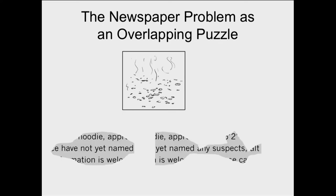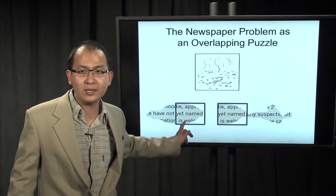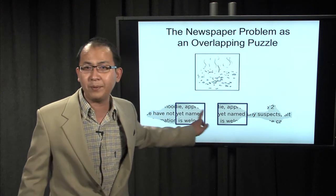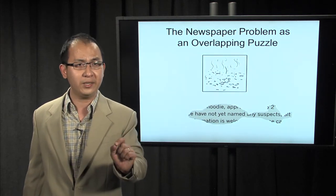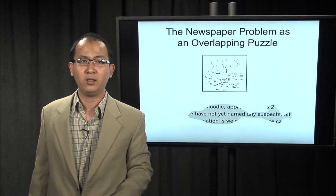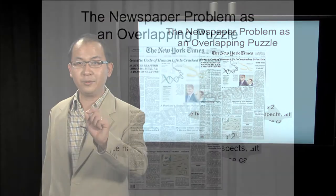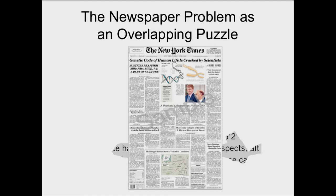In order to reconstruct the newspaper from these remaining pieces, there's a very important intuition: we use the overlapping information to construct the newspaper. In this picture, you can see two pieces that have overlapping information. We merge these two pieces into one bigger piece and continue the process. If you are lucky, you are going to see the newspaper — and the content of the New York Times on June 27th is about the human genome DNA.